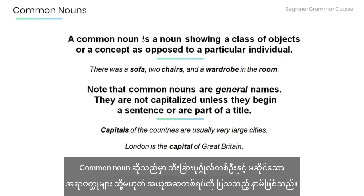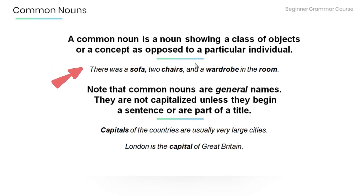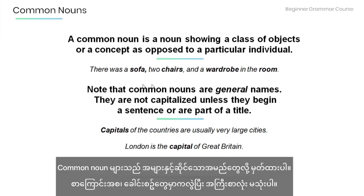A common noun is a noun showing a class of objects or a concept, as opposed to a particular individual. For example: there was a sofa, two chairs, and a wardrobe in the room. Note that the common nouns are general names.